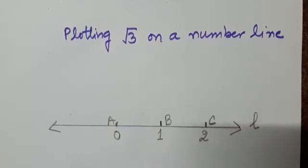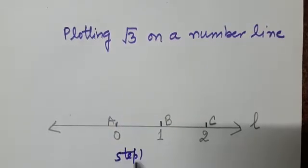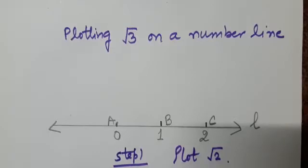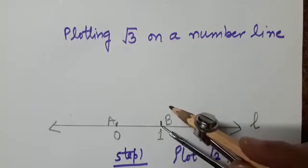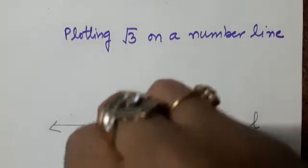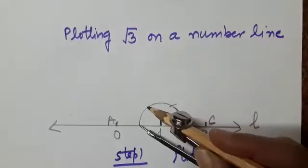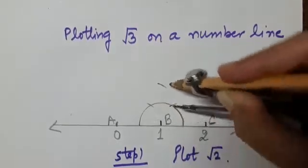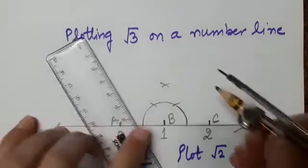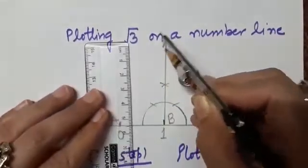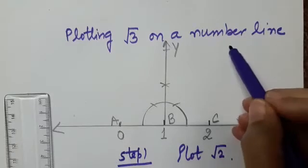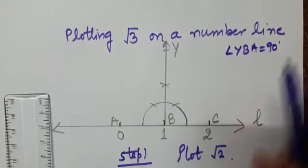Now, for representing square root of 3, step 1 is to plot square root of 2. You know how to plot square root of 2. At point B we are going to first construct an angle of 90 degrees. Here I have constructed a ray BY such that angle YBA is 90 degrees.